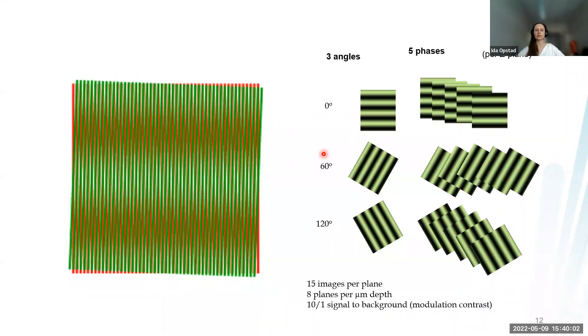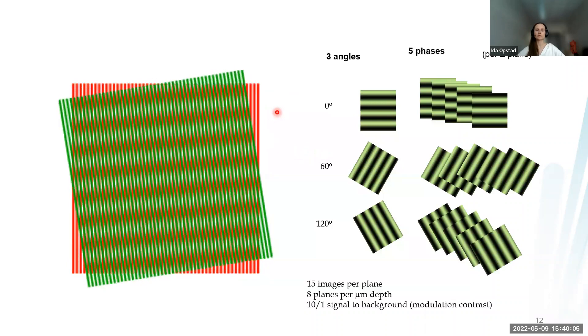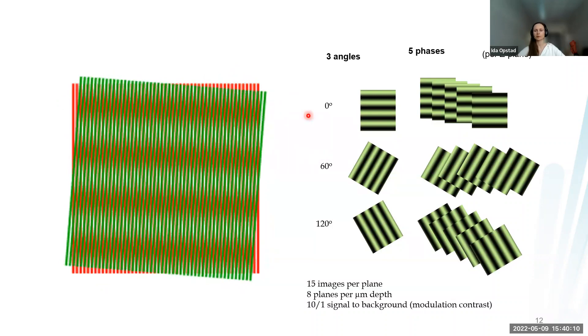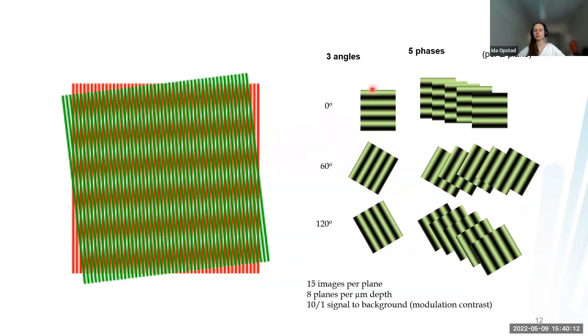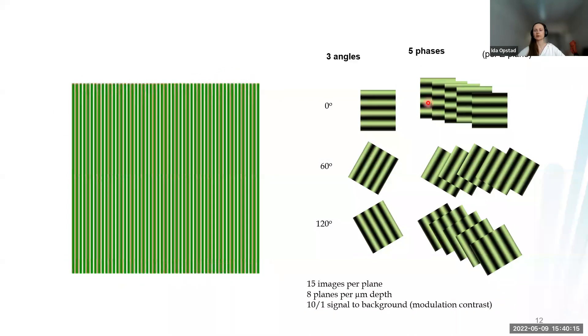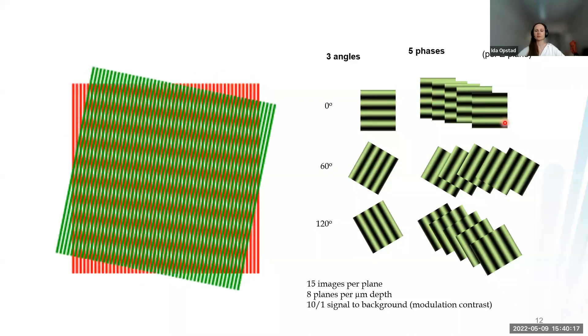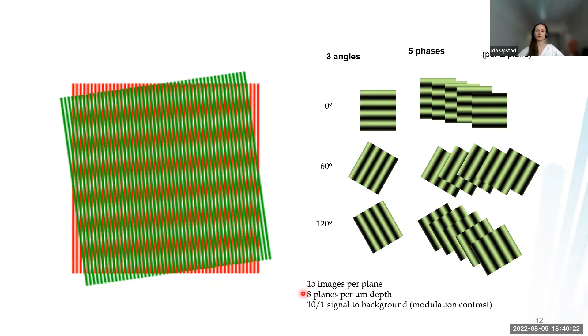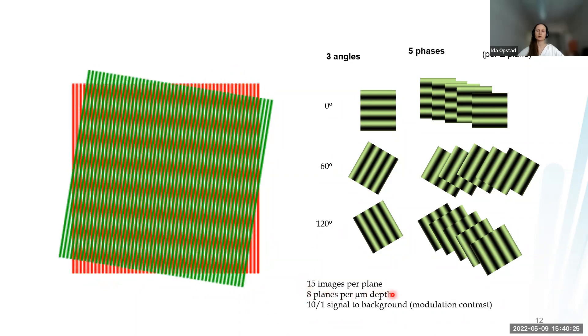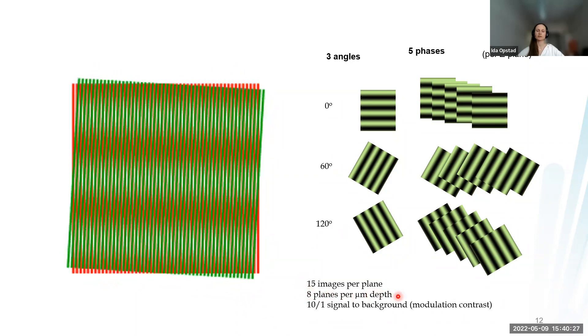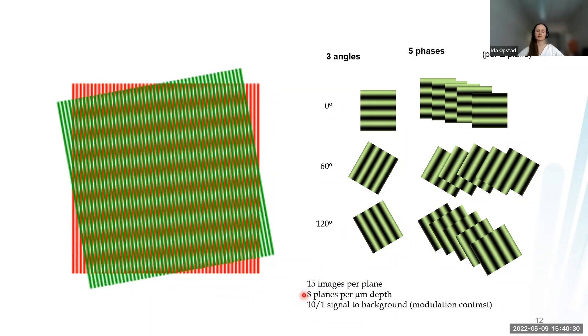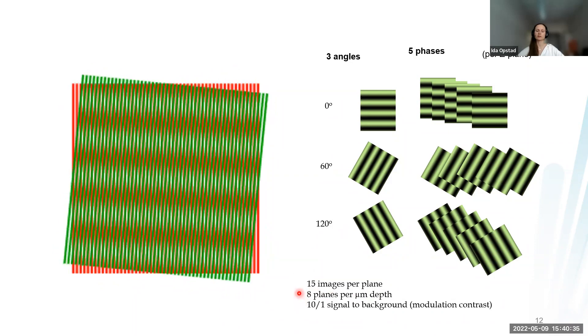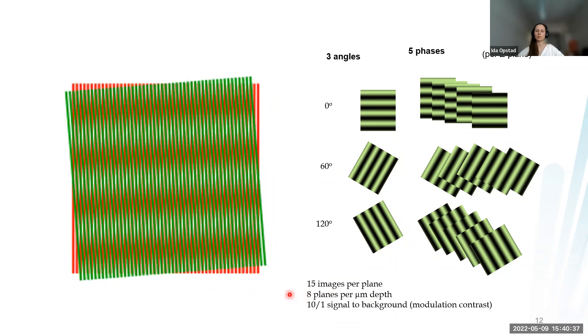In practice we use sinusoidal stripes as the illumination pattern. For the microscope I've used, we illuminate at three different angles and five different phase shifts. It's also a volumetric microscope where we use eight planes per micrometer depth. So we need 15 times eight images just to get one color channel for one micrometer volume.